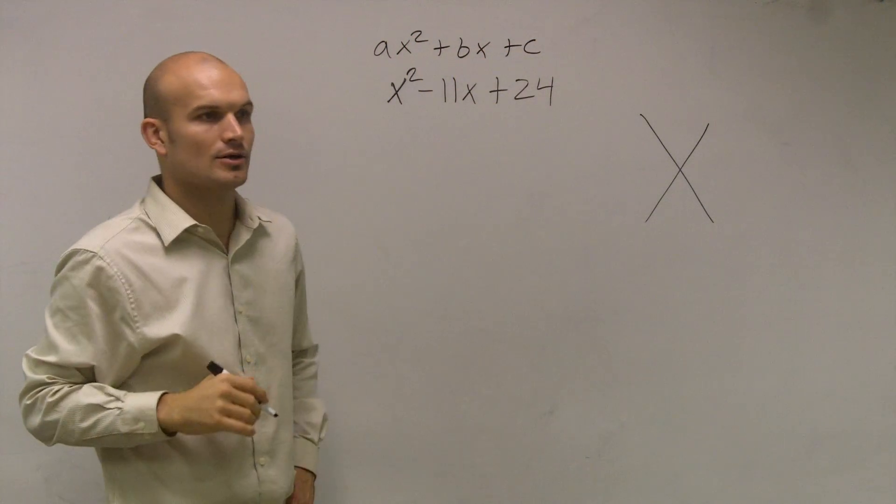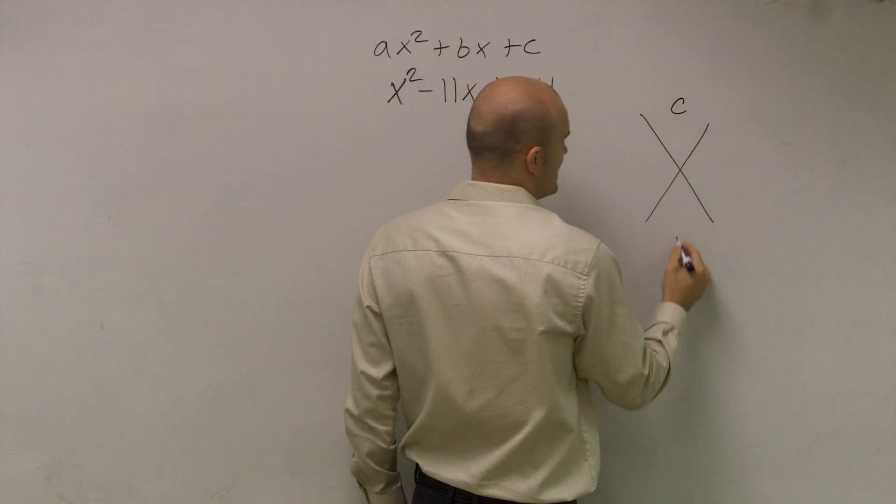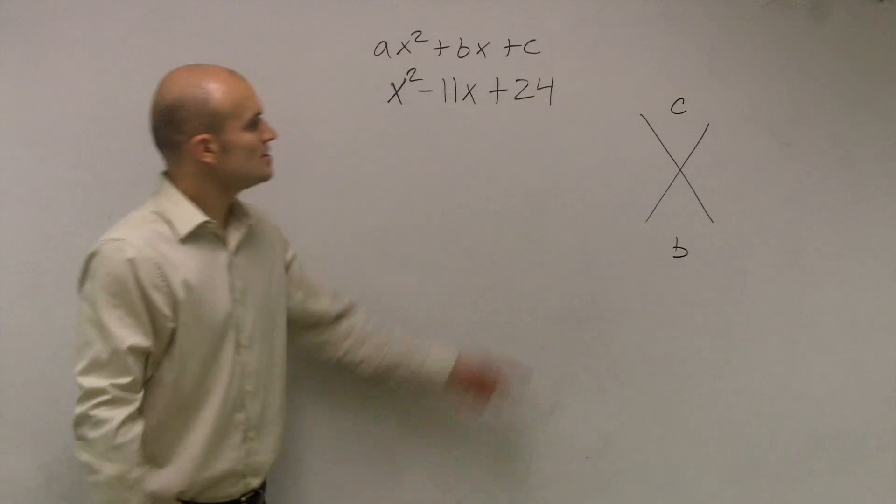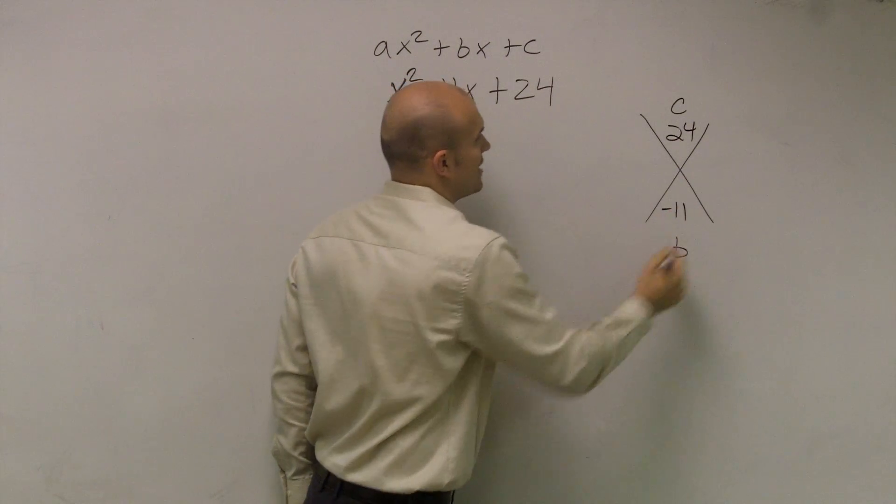It should help us create a diamond triangle, where up top we put our c and our b. So c in this case is going to be my number 24, and my b is going to be negative 11.